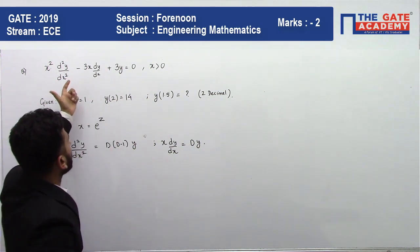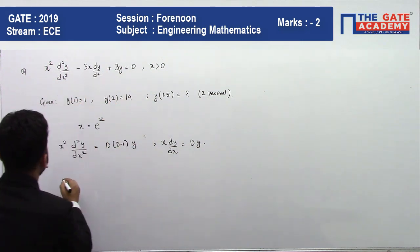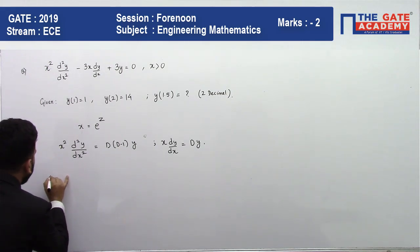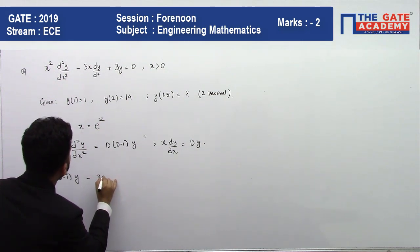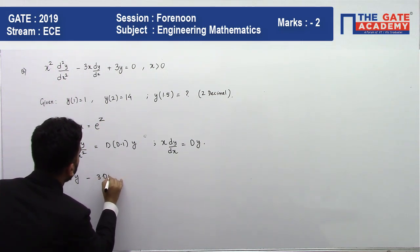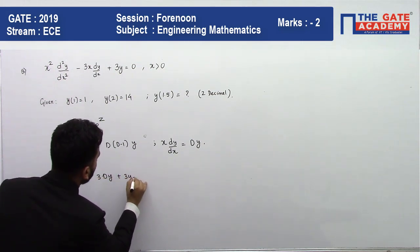On substituting this, it will become D(D-1)y - 3Dy + 3y = 0.